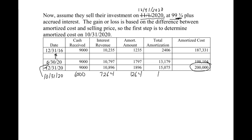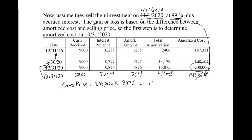So the amortized cost at that point in time is $199,368 — that's the number we needed. The amortized cost at the very end of the bond's life would equal face value because the discount has been fully amortized. Now for the gain or loss: the sales price is $200,000 × 0.9975 = $199,500. The amortized cost is $199,368. We're selling it for $132 more than what's on our books — so we call that a gain.